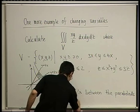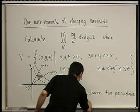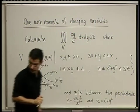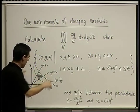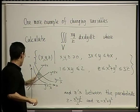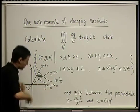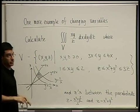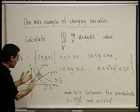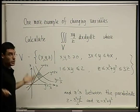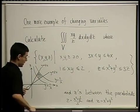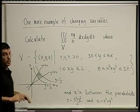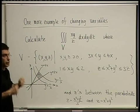So z is between the paraboloids z = (x² + y²)/3 and z = x² + y². This is too difficult to draw and too difficult to write as a simple domain. Maybe it's doable — the z's do sit nicely between functions of x and y — but there's a better way of doing it. Let's do a change of variables.